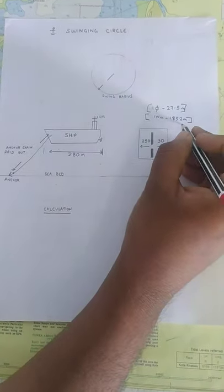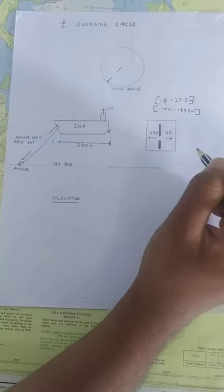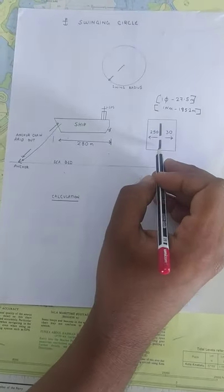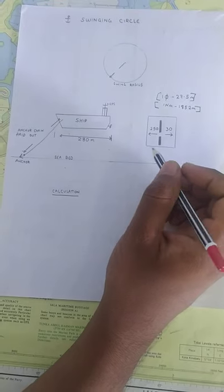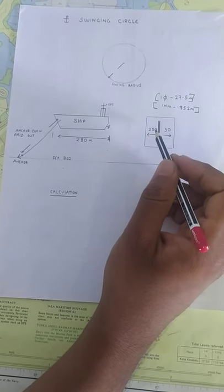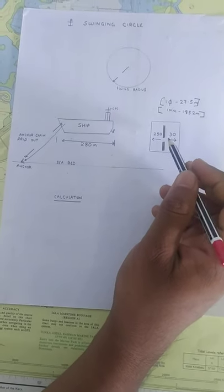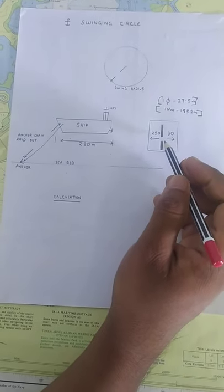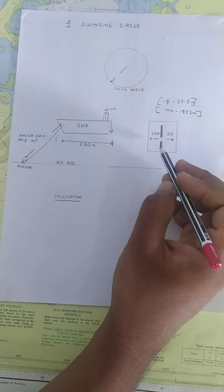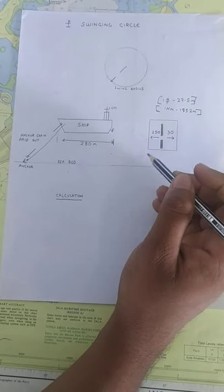One nautical mile is 1852 meters and there will be marking on your bridge wing telling you the distance from your ship's bridge to the forward and to the aft. Normally, that figure will be good enough because the GPS antennas are normally placed on the main mast.